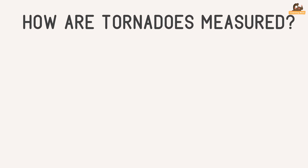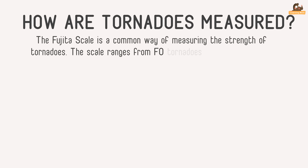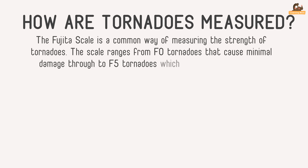How are tornadoes measured? The Fujita scale is a common way of measuring the strength of tornadoes. The scale ranges from F0, tornadoes that cause minimal damage, through to F5 tornadoes, which cause massive damage.